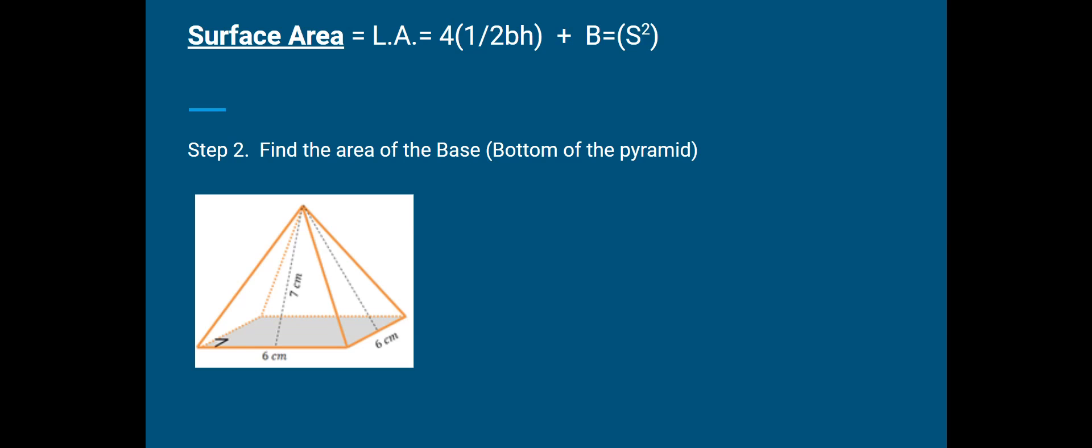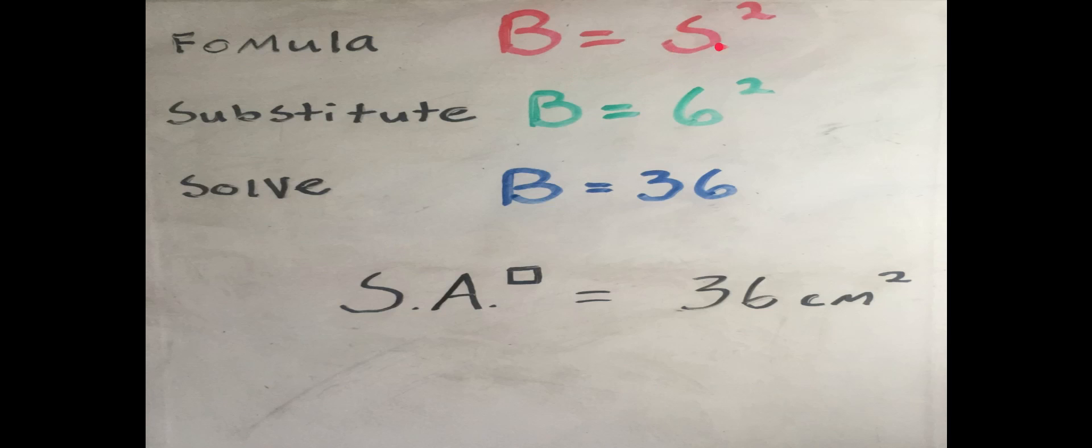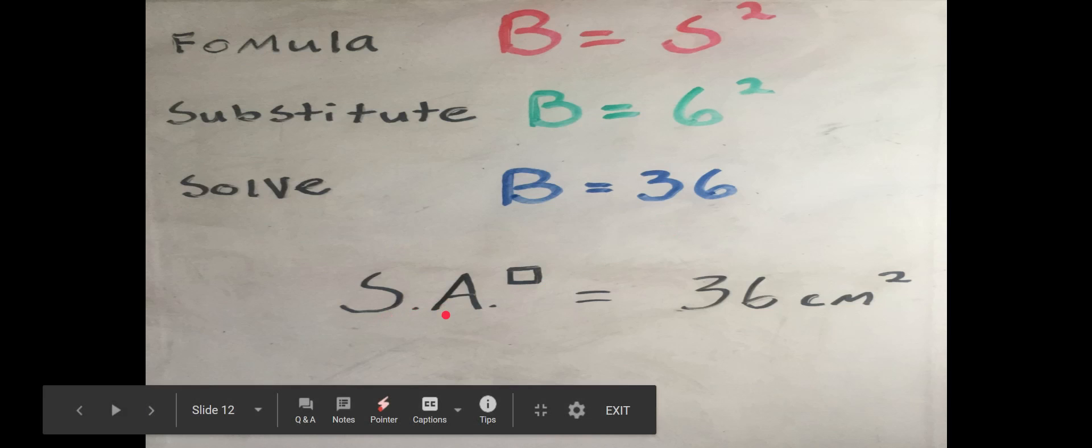Now, step two. We have to find the area of the base. So, now that we got the area of our four triangles, we are now going to find the area of our base, the bottom of the pyramid. Here's the area for the bottom of our base, and it's S squared. And, once again, you can see F, S, S throughout the lesson. We're going to now substitute B equals six squared. Then, we're going to solve. Last but not least, B equals 36. Our surface area for our base, our square base, is 36 centimeters squared.